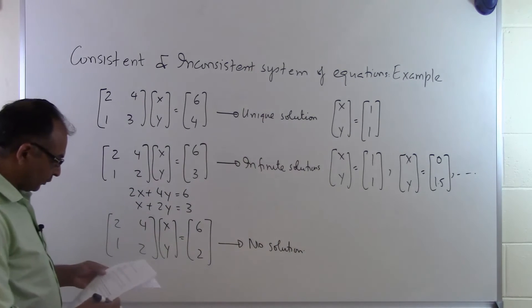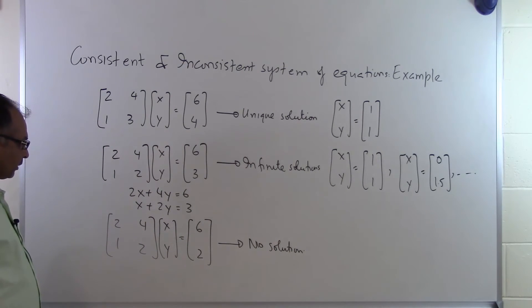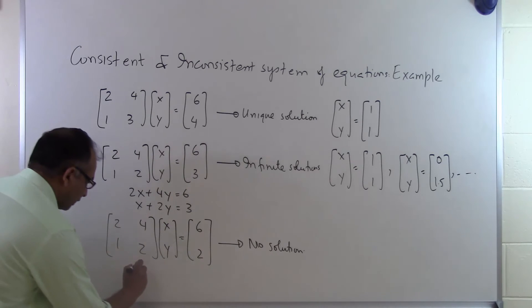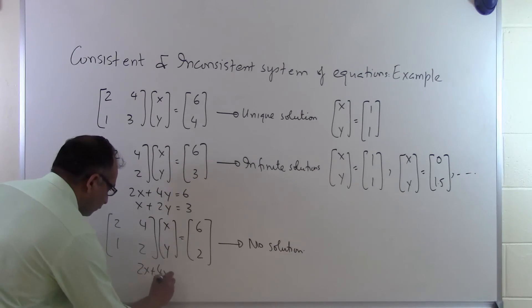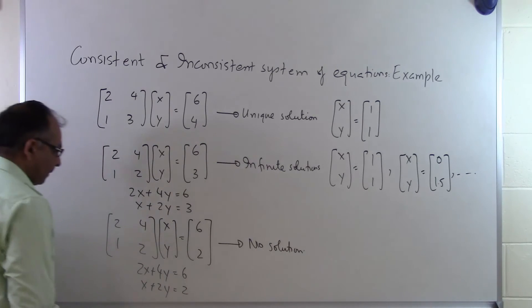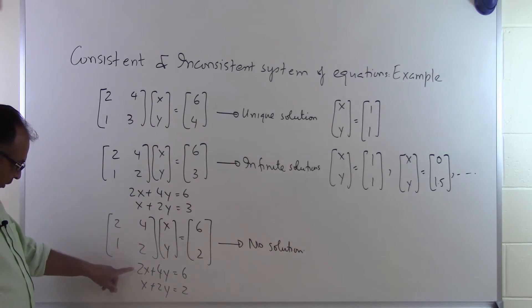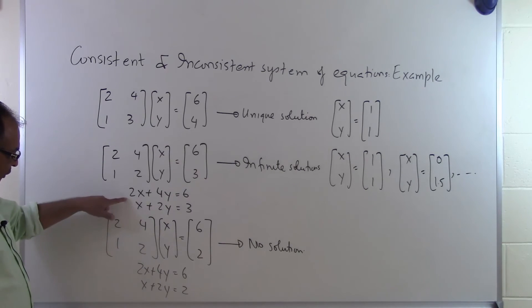There is no solution which exists for this set of equations right here. What is different about this set of equations and the previous set of equations is that if I would expand this I will get 2x plus 4y equals 6, and x plus 2y equals 2. If you want to draw this on a piece of graph paper you will find two parallel lines which will never intersect with each other. Hence there is no solution for this set of equations. As opposed to the previous one, you have two parallel lines but they are on top of each other, so that's why you have infinite solutions.